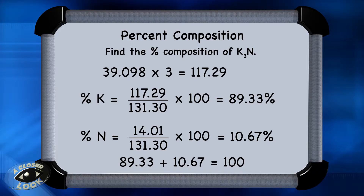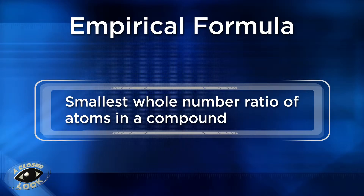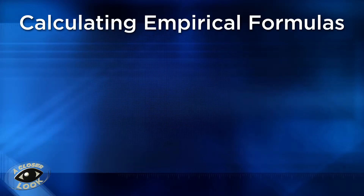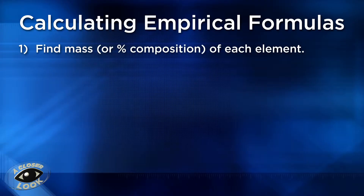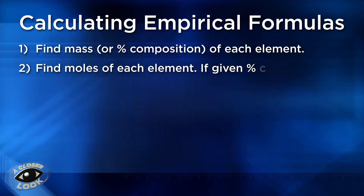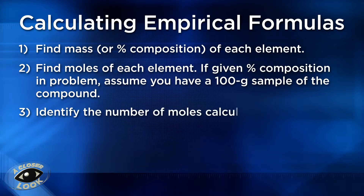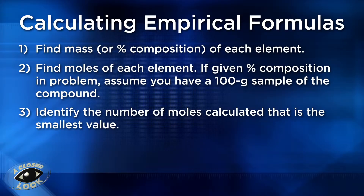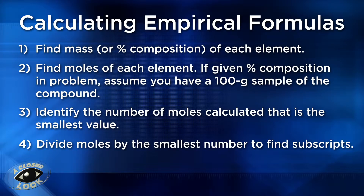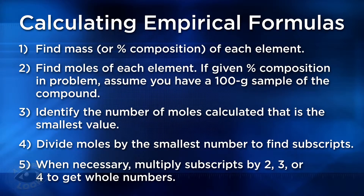Let's move on from percent composition to empirical formulas. An empirical formula is the smallest whole number ratio of atoms in a compound. First, find the mass percent of each element. Then figure out how many moles of each element there are — if given percent composition, assume a 100-gram sample so you can convert percentages directly into masses in grams. Once you have moles of each element, divide every molar amount by the smallest number of moles to get each element's subscript. When necessary, multiply subscripts by 2, 3, or 4 to obtain whole numbers.